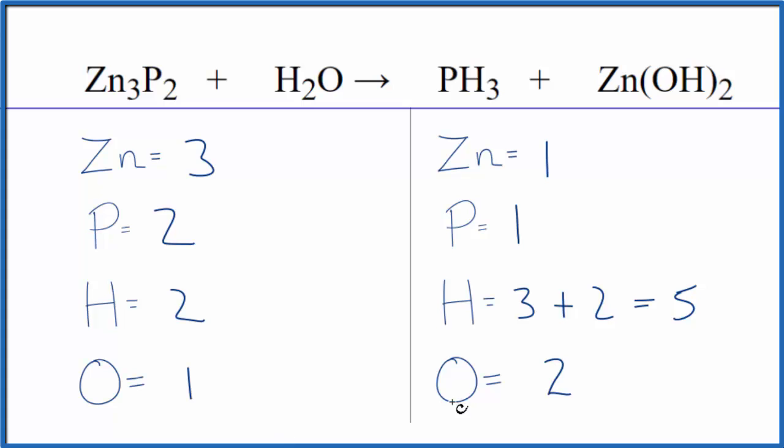Okay, let's leave the oxygen until last. Let's balance the zinc, because we could just put a three in front of the zinc hydroxide. One times three, that would give us three zinc atoms. They're balanced.